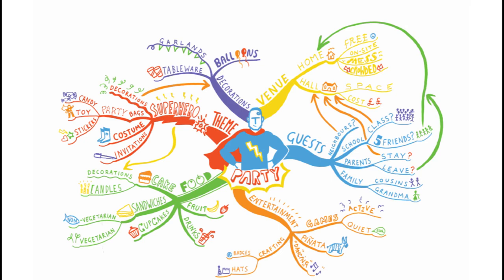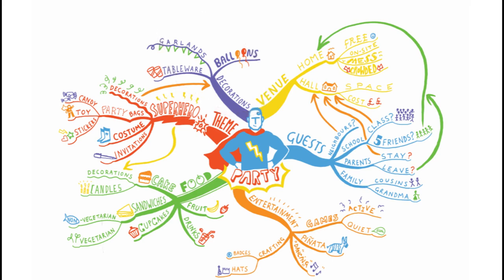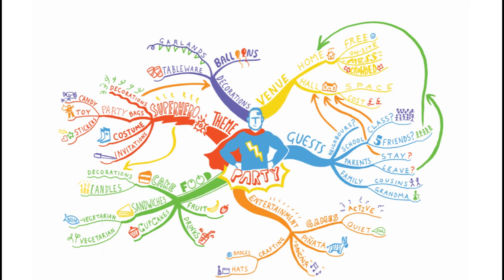Now, what will we cover today? Birthday is the central topic. The sub-topics are decoration, venue, and guests. For the venue, you can choose between a house or a hall — there are two choices you can use as sub-branches.